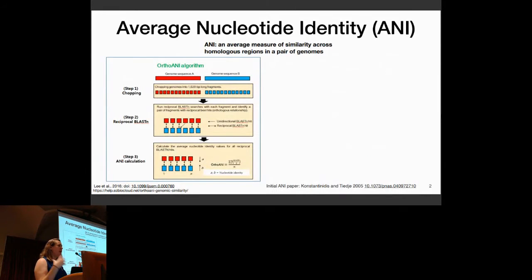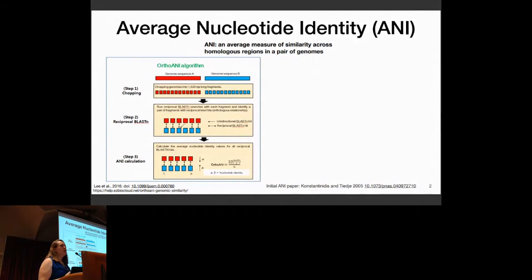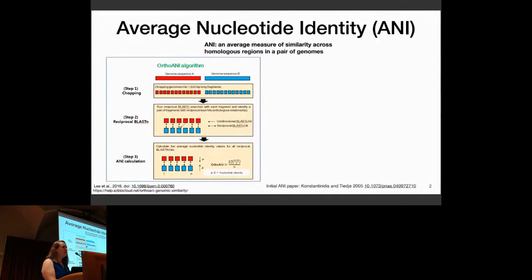We're talking about an average similarity estimation across a pair of genomes. It was initially introduced back in 2005 as a genome-based proxy for the lab-based DNA-DNA hybridization, which was a method of determining whether two organisms were members of the same species or different.